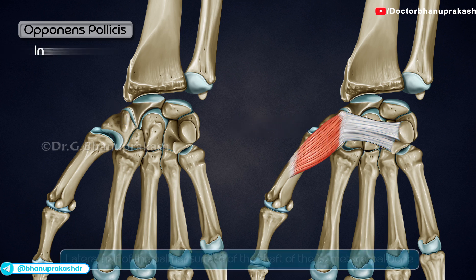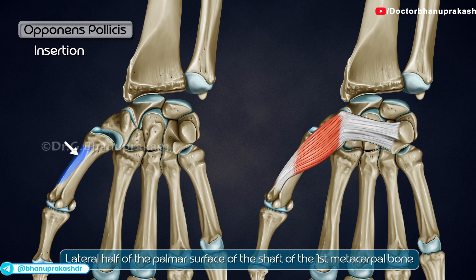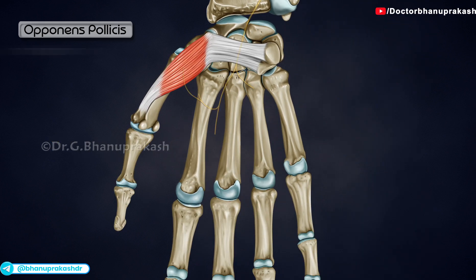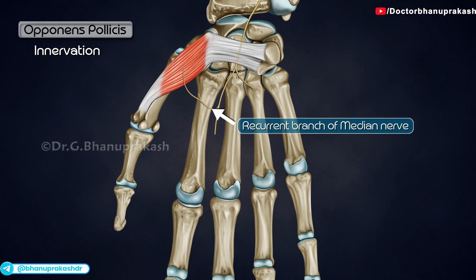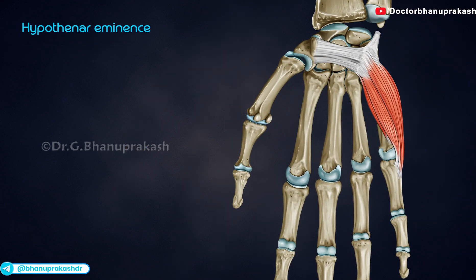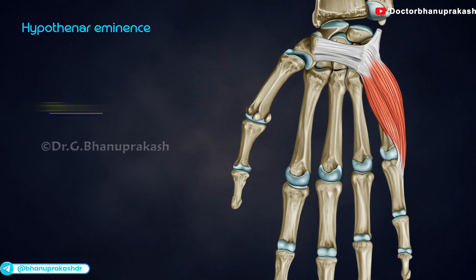It is inserted at the lateral half of the palmar surface of the shaft of the first metacarpal bone. It medially rotates and flexes the carpometacarpal joint of the thumb, and is innervated by the recurrent branch of the median nerve. The hypothenar eminence comprises three muscles.